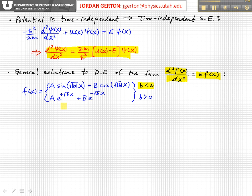When b is greater than zero, we get these exponential solutions. A e to the plus root bx, plus B e to the minus root bx. Since b is positive here, you don't have to put the absolute value signs. And so these are the general form of solutions of this form under these conditions, b is less than zero, b is greater than zero.